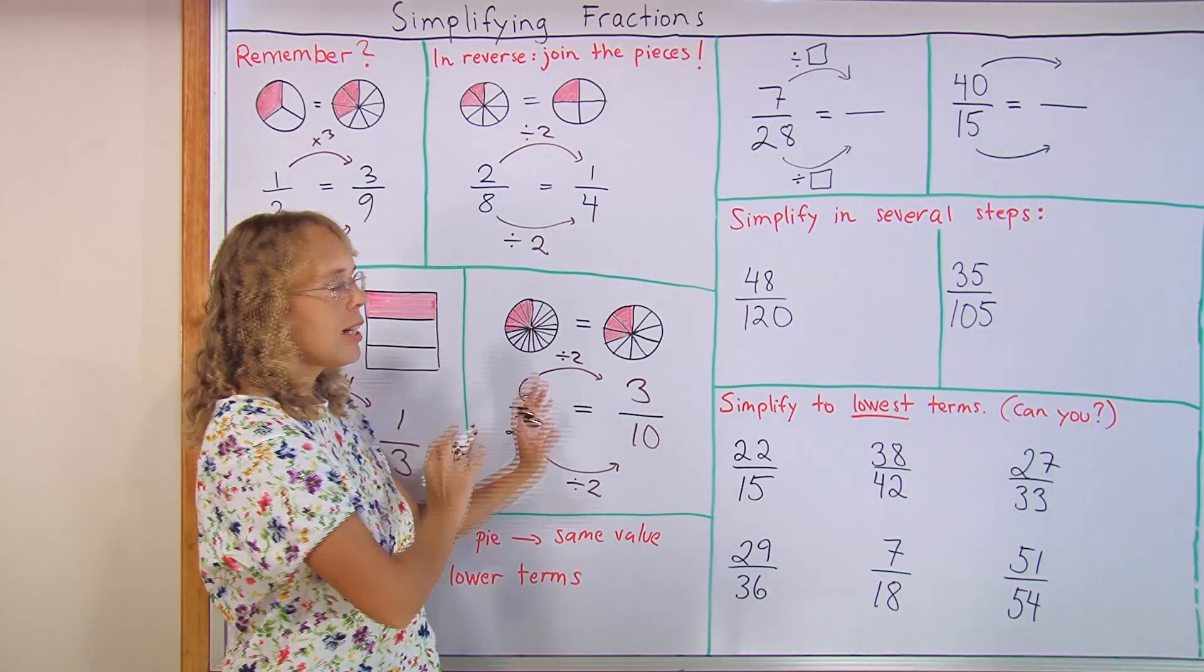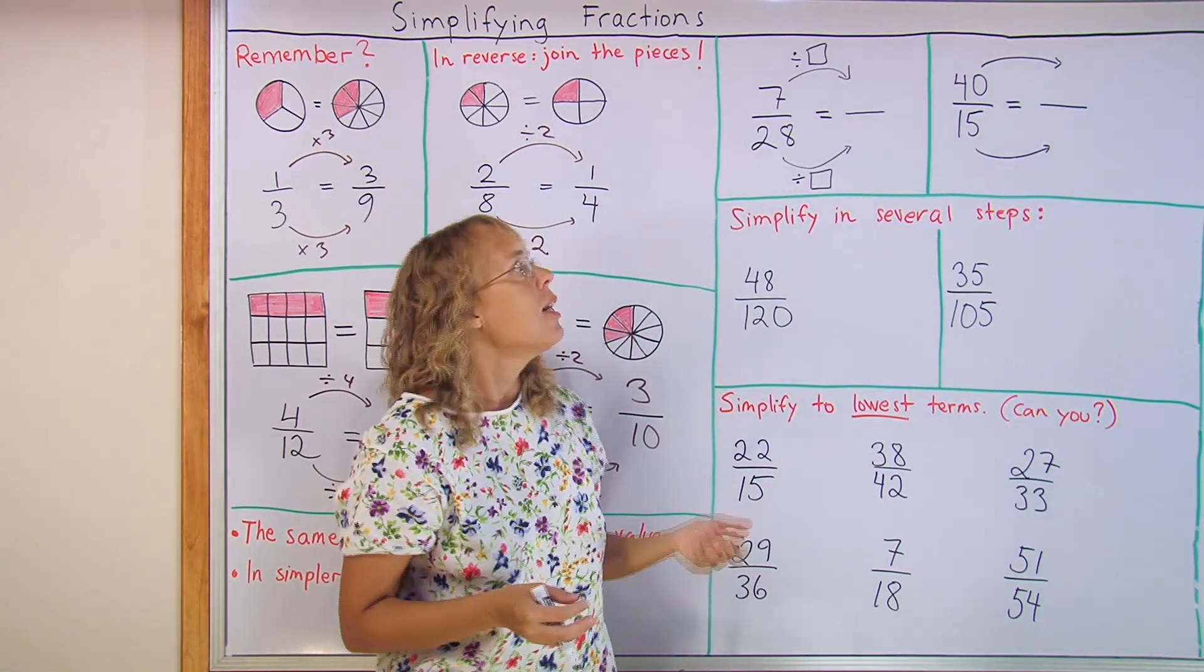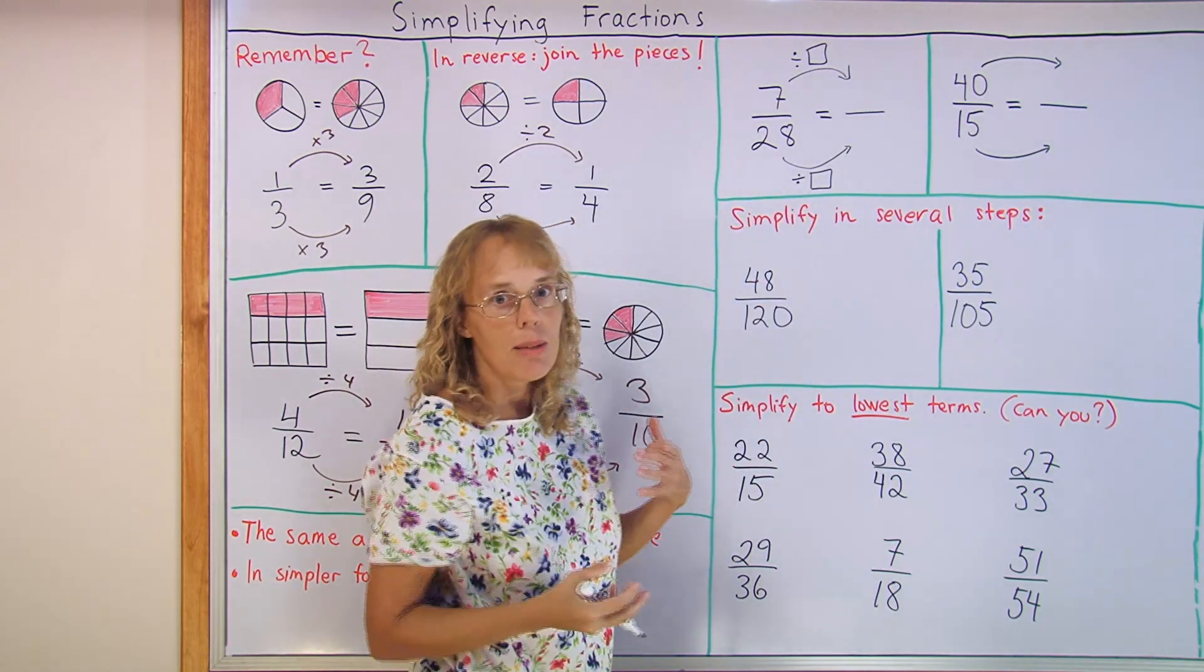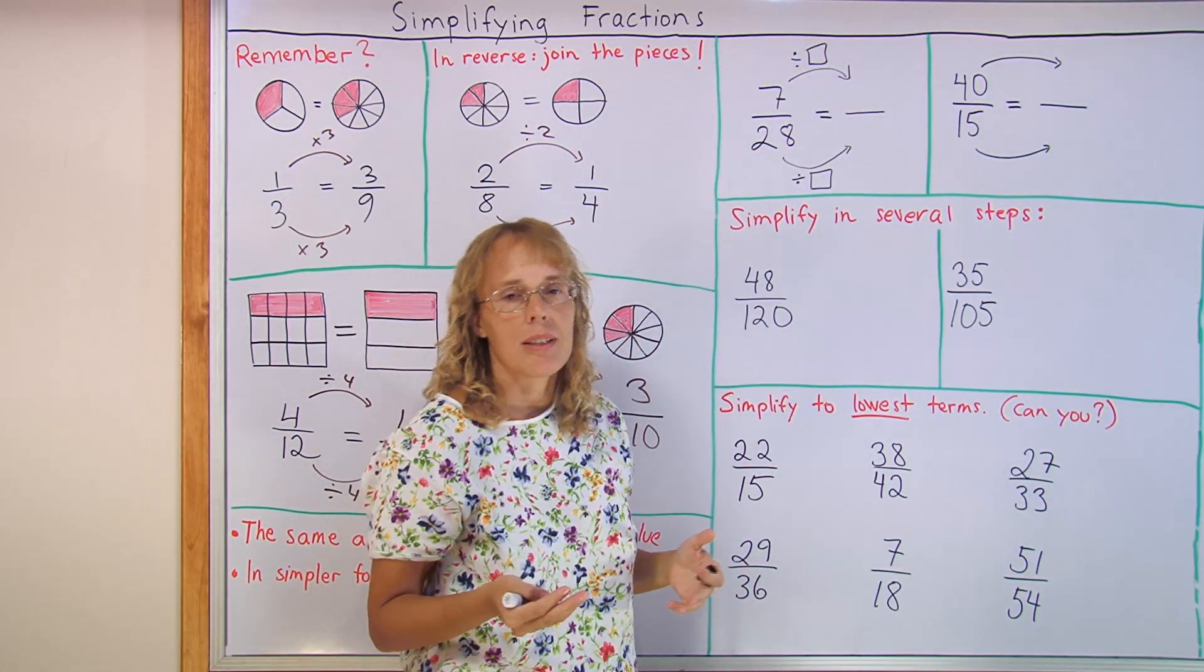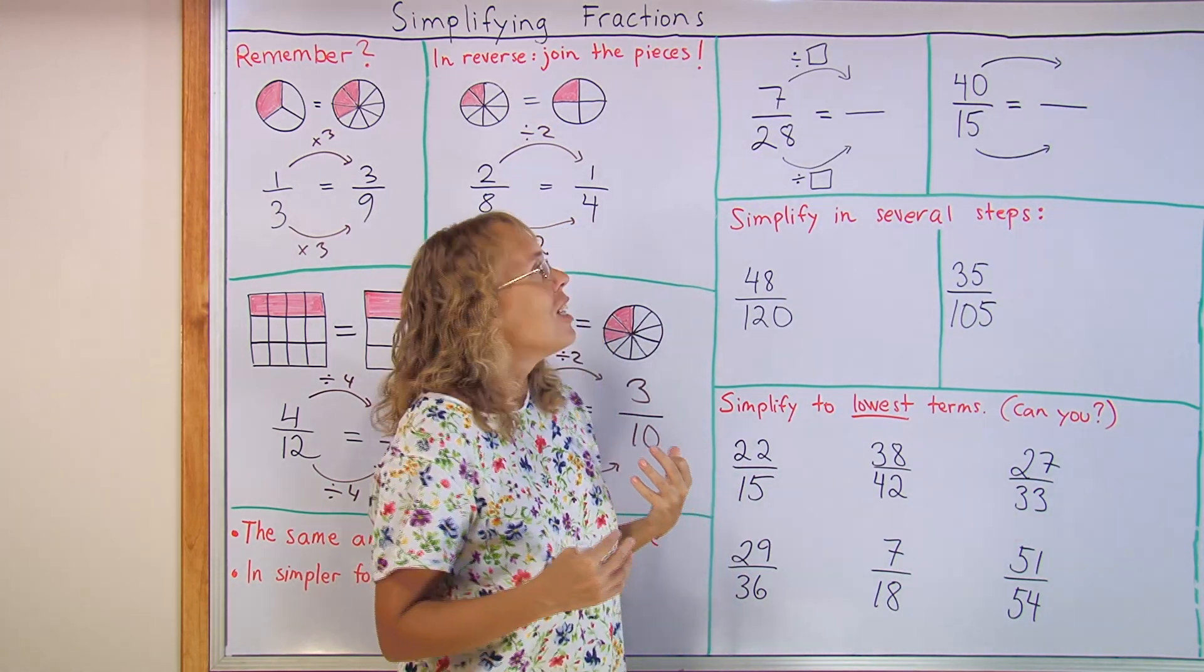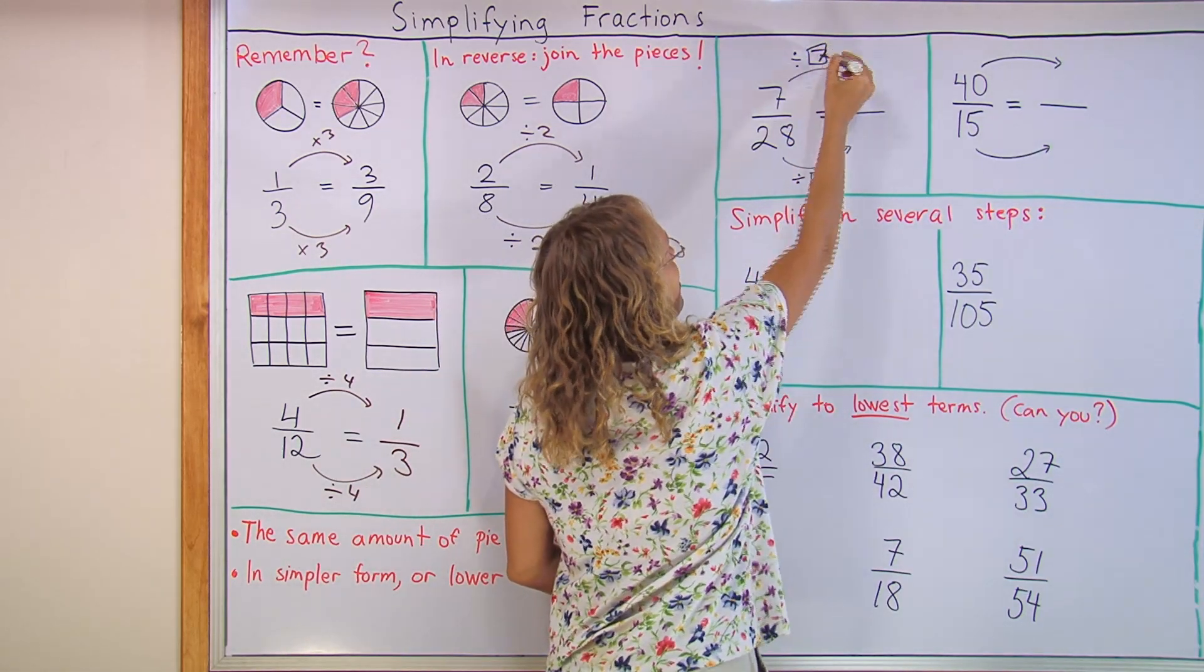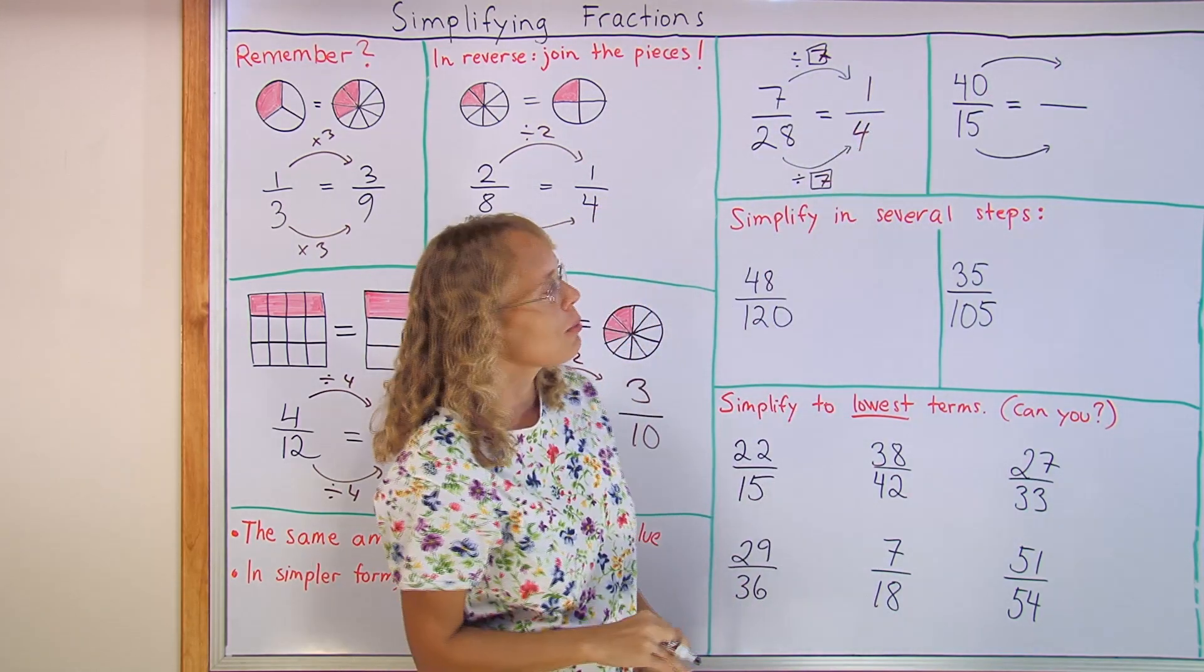Then after exercises with visual models, I like to give students these kind of exercises where there are numbers only, but the arrows are ready here as a reminder that they need to divide by something. Seven divided by something and then twenty-eight divided by something. Here is where the knowledge of the multiplication tables is crucial. The student has to recognize that seven and twenty-eight both are in the table of seven. They are divisible by seven, so we can divide by seven. Seven divided by seven is one and twenty-eight divided by seven is four. It's simplified to one-fourth.